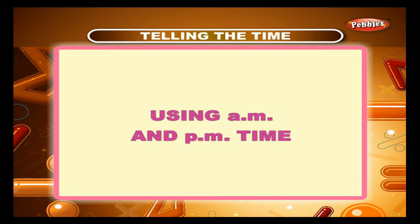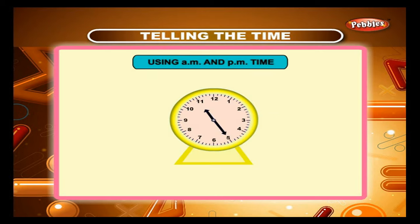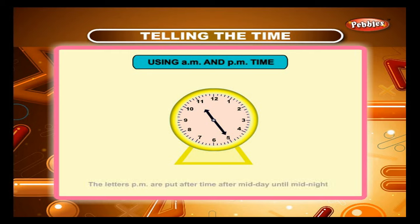Using AM and PM time. The day is divided into two parts. Look at the time on this clock. If it is in the morning, we say the time is 25 minutes past 11 in the morning — the letters AM are put after times before midday, so we write it as 11:25 AM. If it is at night, we say the time is 25 minutes past 11 at night — the letters PM are put after times from midday until midnight, so we write it as 11:25 PM.